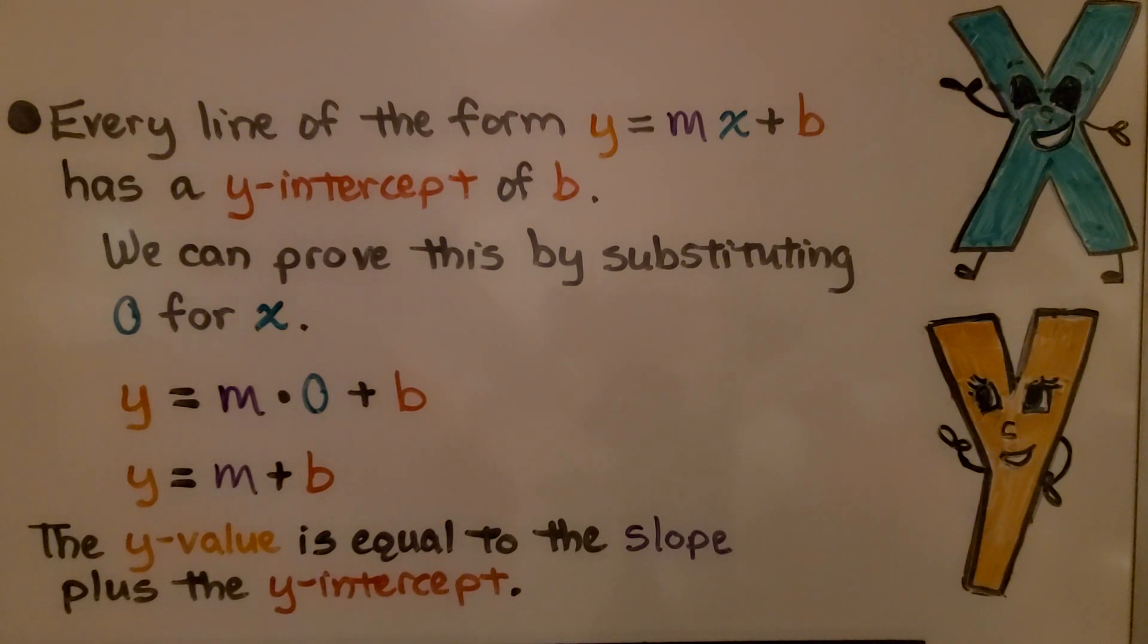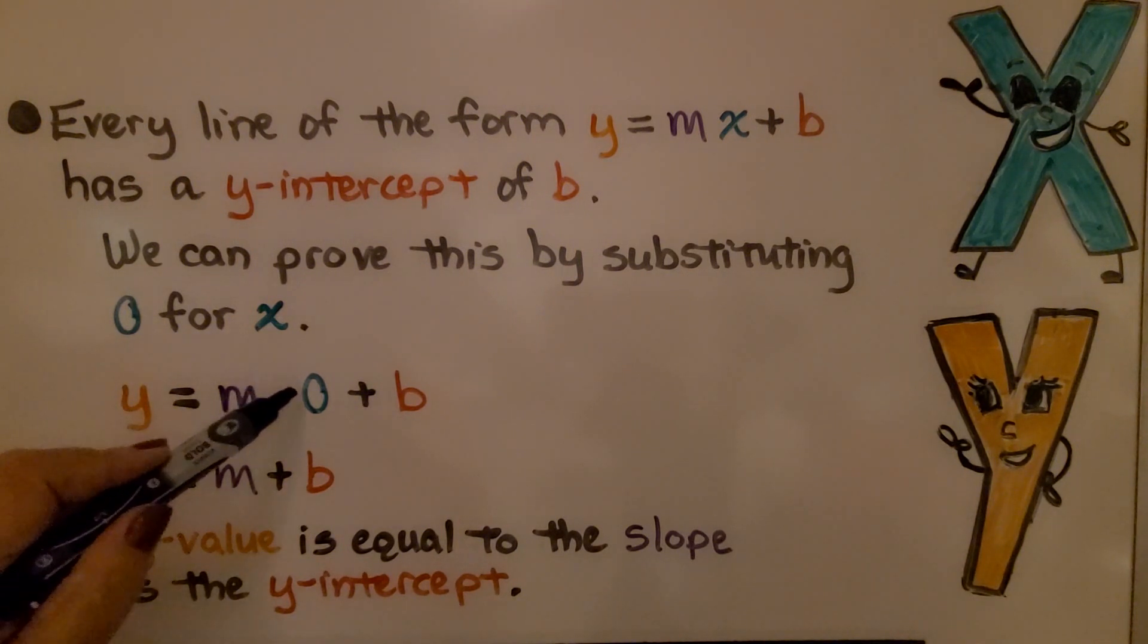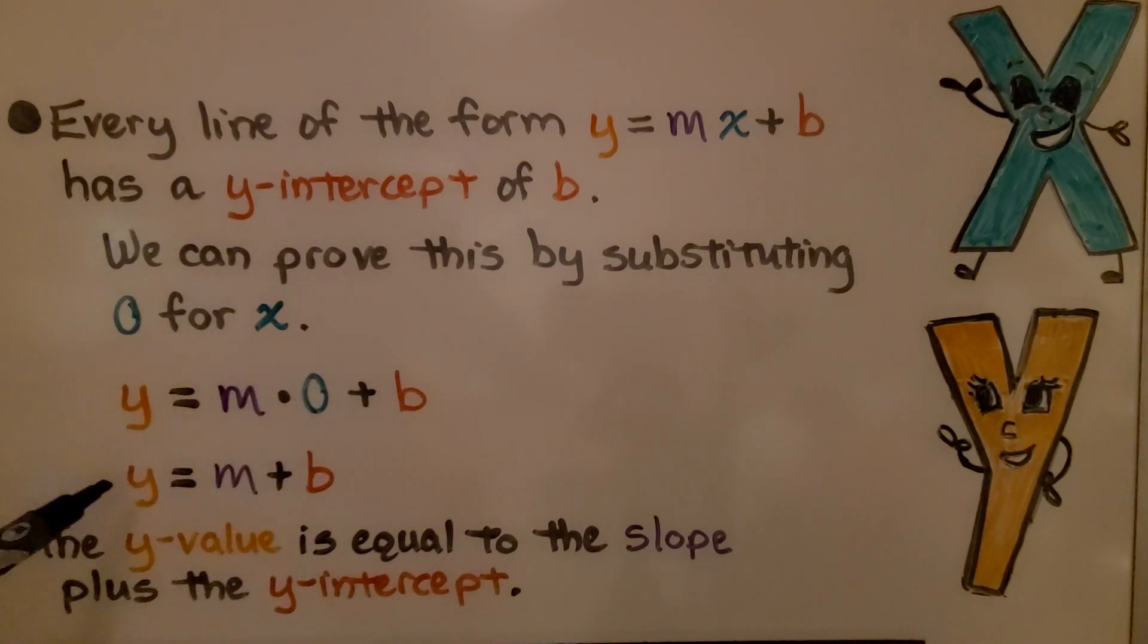Every line of the form y equals mx plus b has a y-intercept of b. We can prove this by substituting 0 for x. If we have y equals m times 0 plus b, we're going to have y equals m plus b. The y value is equal to the slope plus the y-intercept.